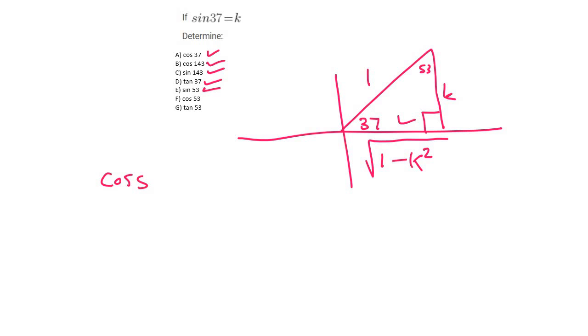Cos 53. So we just start up here and we use cos. Now cos is adjacent over hypotenuse, and so that's going to end up being k over 1, which is the same as just having k.